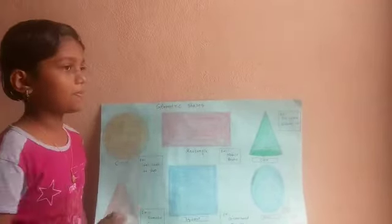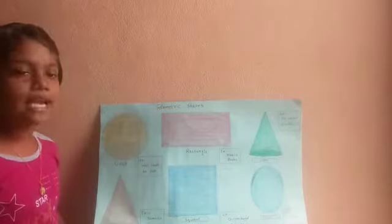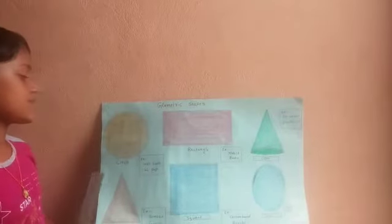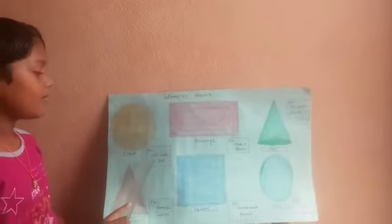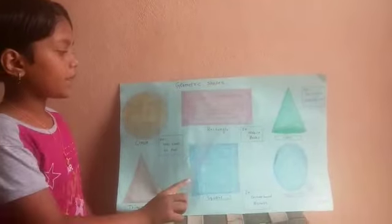Geometric shapes — shapes and examples. Circle. Examples: Ball, clock, lollipop.